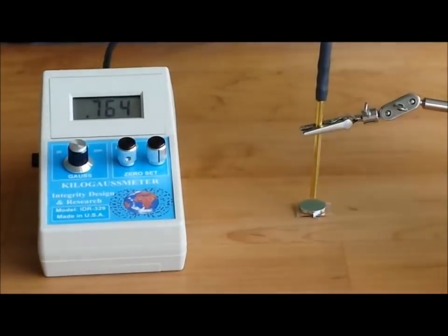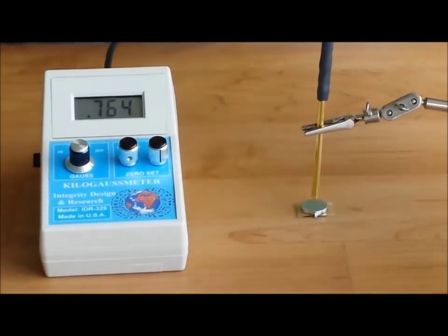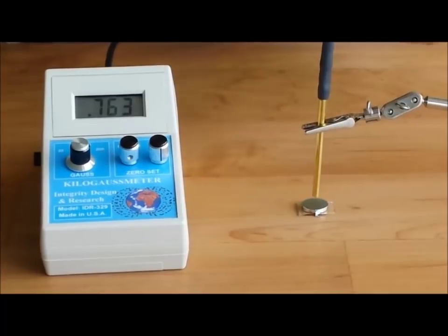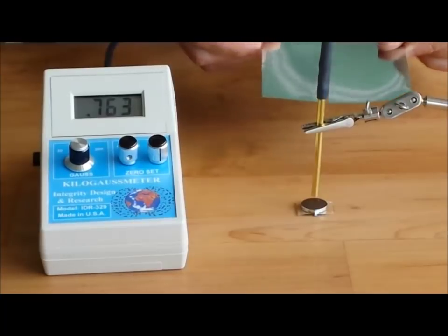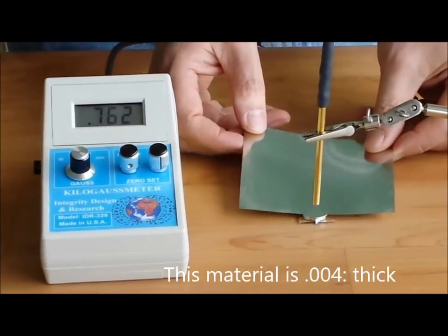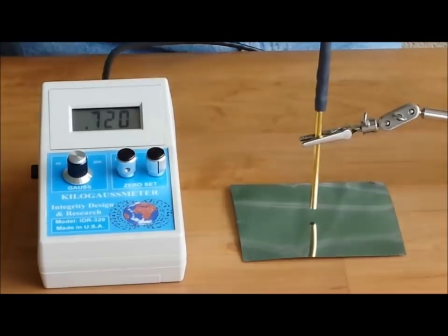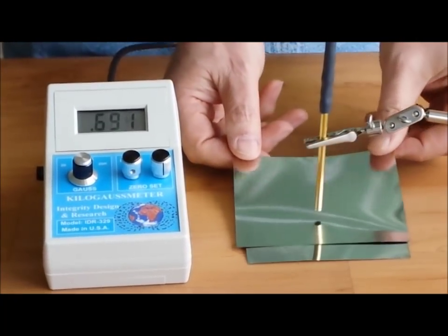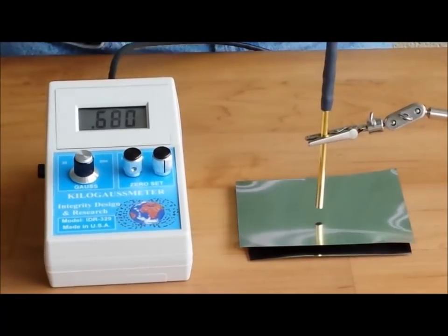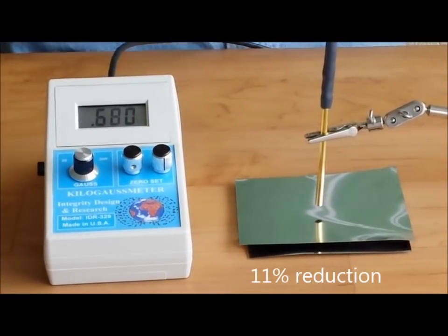Finally, I'd like to show you the effect of mu metal. Mu metal has a very high permeability, but a fairly low saturation level, which means it's not appropriate for shielding strong magnetic fields. When I set one layer in, you see a small reduction to 720. When I put a second layer in, we go down to 680.